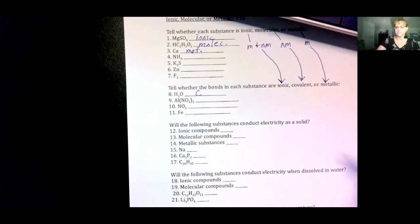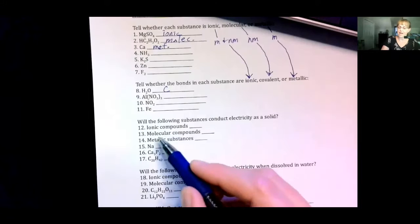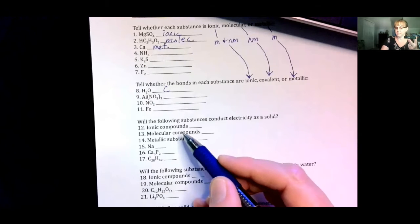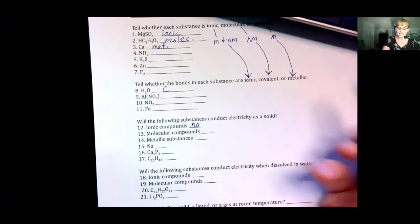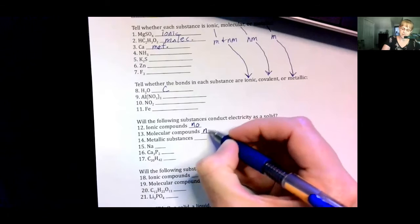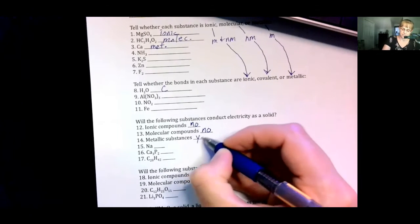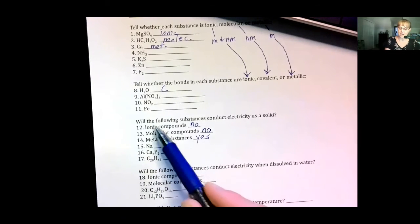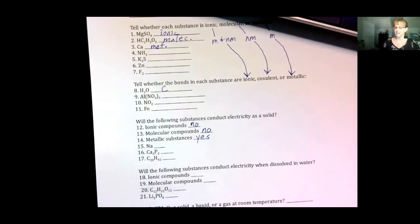Number twelve, will the following substances conduct electricity as a solid? Remember, ionic compounds only conduct electricity when they're dissolved or melted. So, as a solid, no, ionic compounds will not. Molecular compounds never conduct electricity. Metallic substances always conduct electricity. So, figure out, is sodium ionic, molecular, or metallic? Then you will know if it conducts electricity as a solid or not.